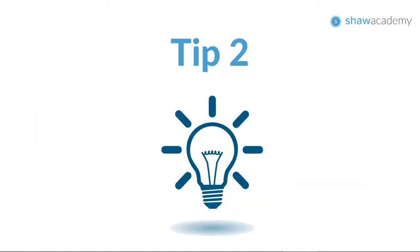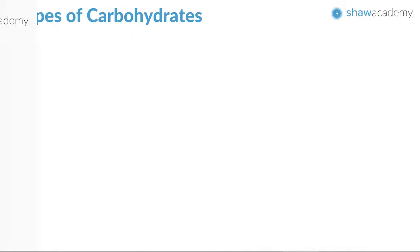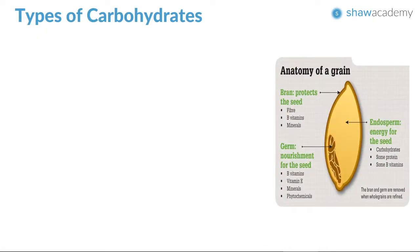Tip number two, still looking at the types of carbohydrates. I have a picture here to help you better understand the difference between whole grain and refined grains. You can see the bran on the outside of the grain — it is high in fiber, high in B vitamins and minerals.